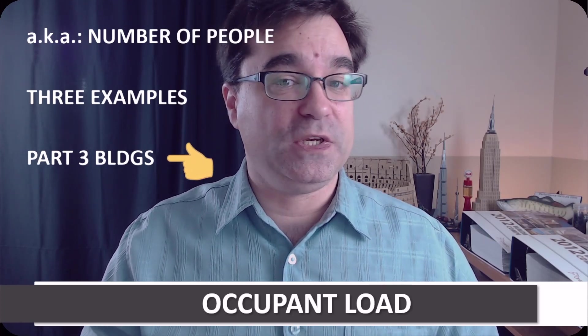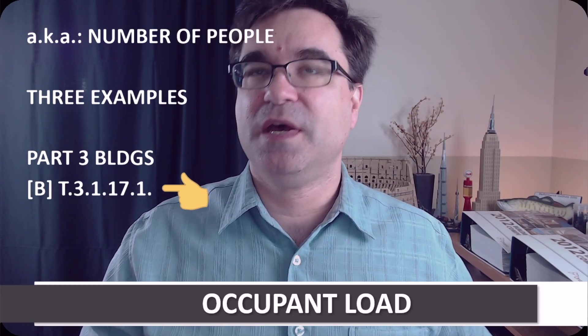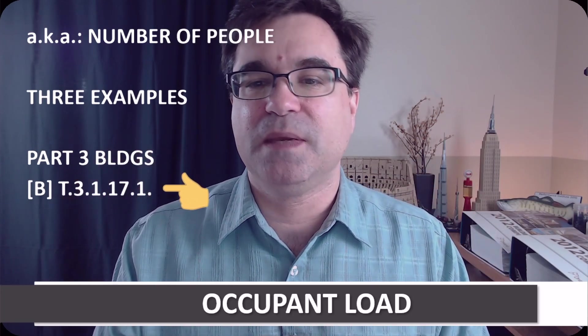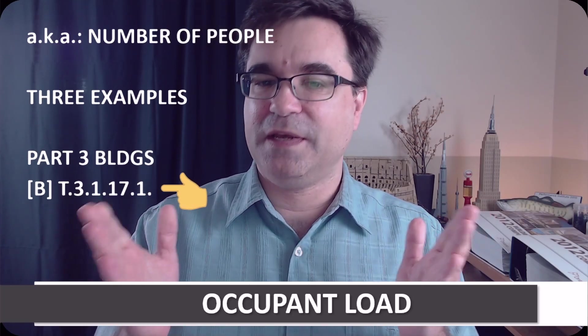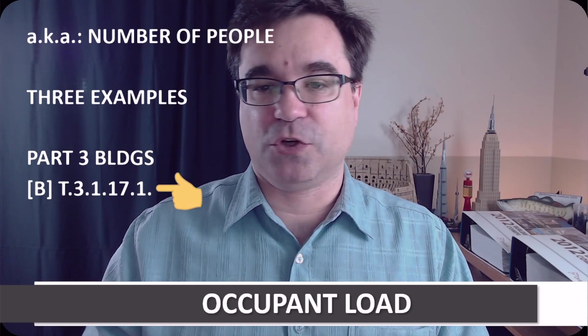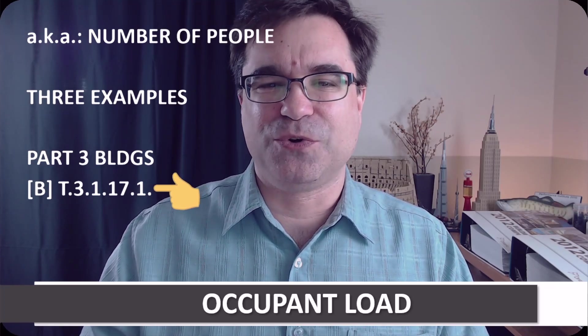For each of these examples, we will assume the building is a Part 3 building. In preparation for each of these three examples, please find Table 3.1.17.1 in Volume 1, Division B of the Ontario Building Code. Also, have your calculator ready.